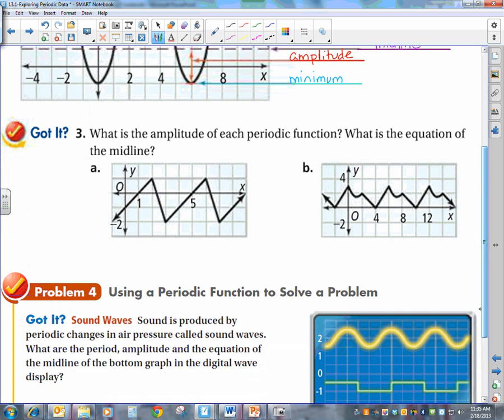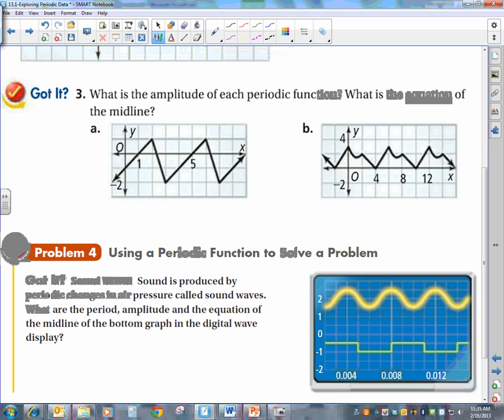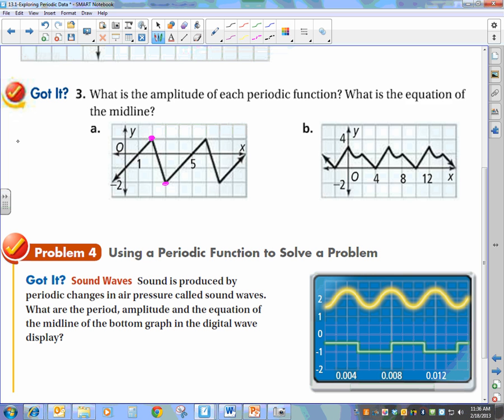So let's go calculate the amplitude and the midline for each of these problems down here. So looking at a, if I need the amplitude, I've got to find the max and the min. So my max is, I have a hard time reading that, max is 1. My min is negative 2. My amplitude is the max minus the min over 2 which becomes 3 over 2. So my amplitude is 3 over 2.